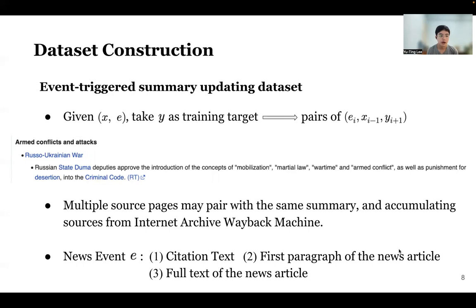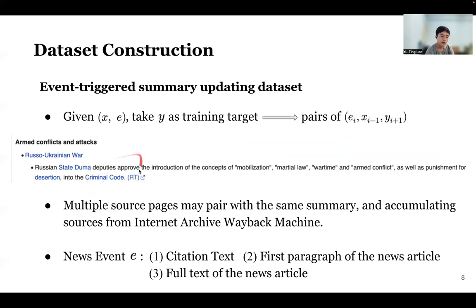In our data, each instance contains a news trigger event E in three levels. E could be the citation text, the first paragraph of the news article, or the full text of the news article. Each instance is simplified into pairs: E at time i, X at time i-1, and Y at time i-1. This is a sample of the Wikipedia current events portal showing a citation text with links and a paired news article. We mark the portal posted at time i, then collect the previous and newer versions of the Wikipedia page contents.